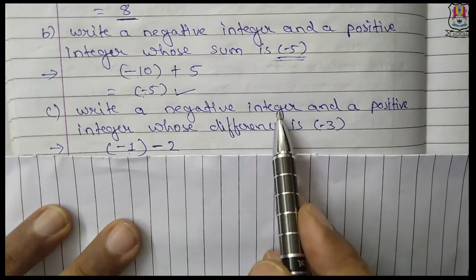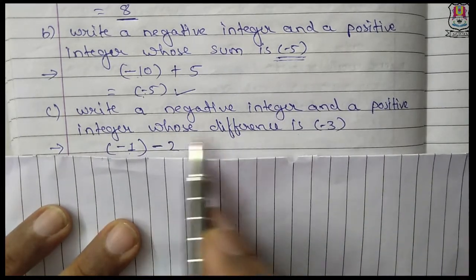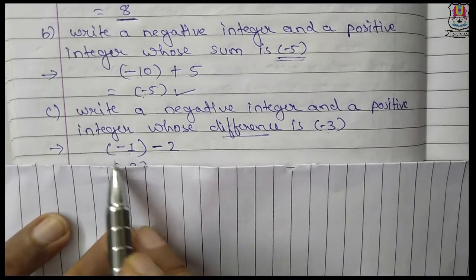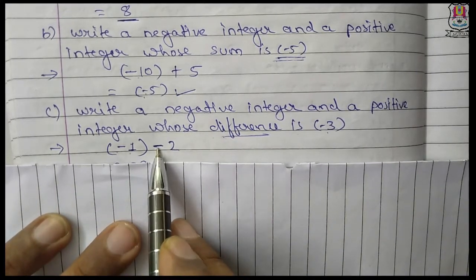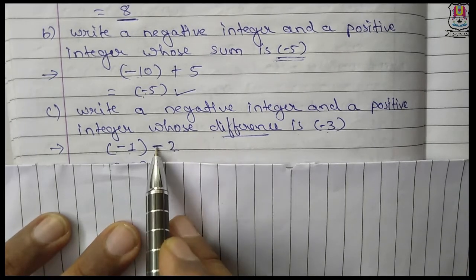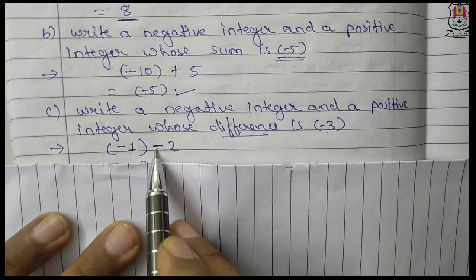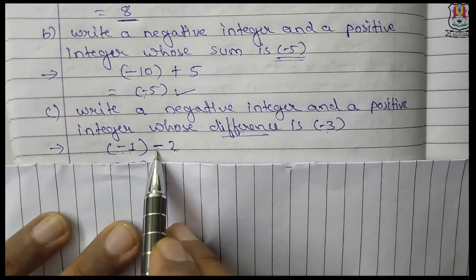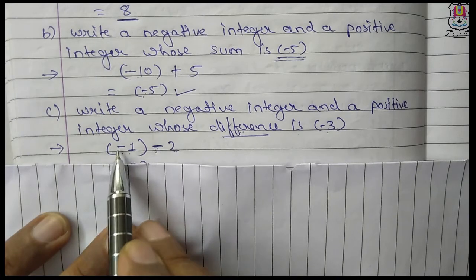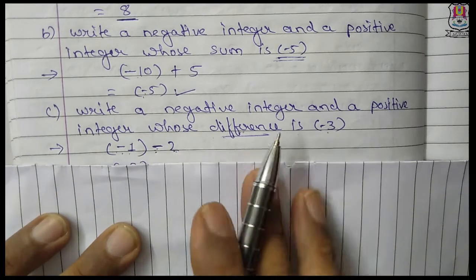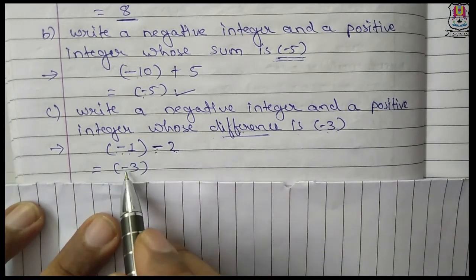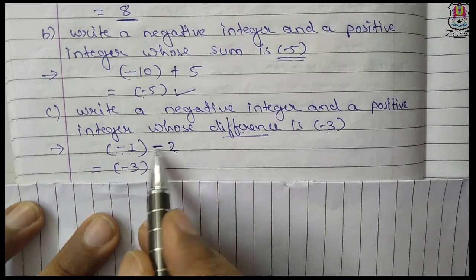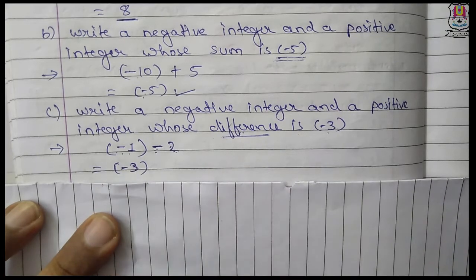Question C: write a negative integer and a positive integer whose difference is minus 3. Difference means subtraction. The example is minus 1 minus 2. This minus is from the difference operation; minus 1 is the negative integer and 2 is the positive integer. Minus 1 minus 2 equals minus 3 because the values are added and the sign of the bigger number — minus — is applied, giving minus 3.